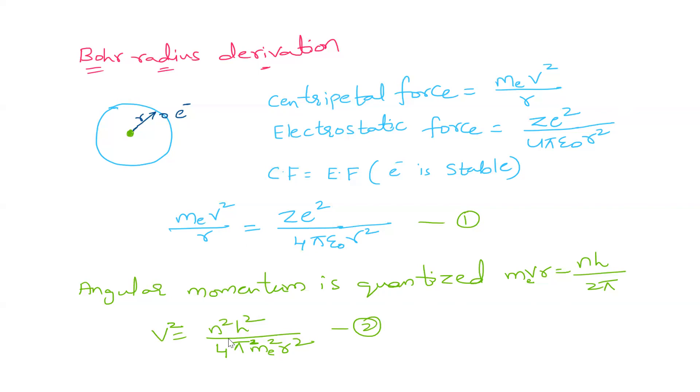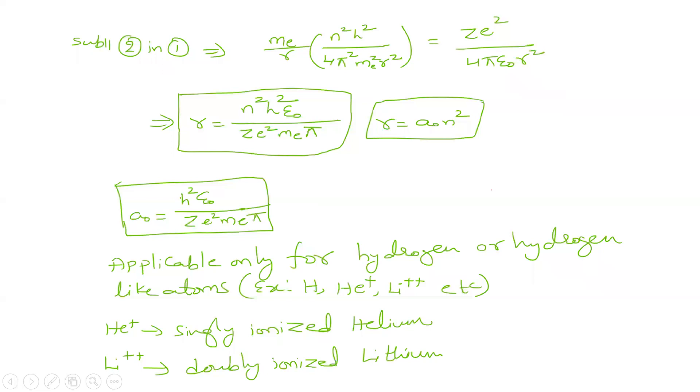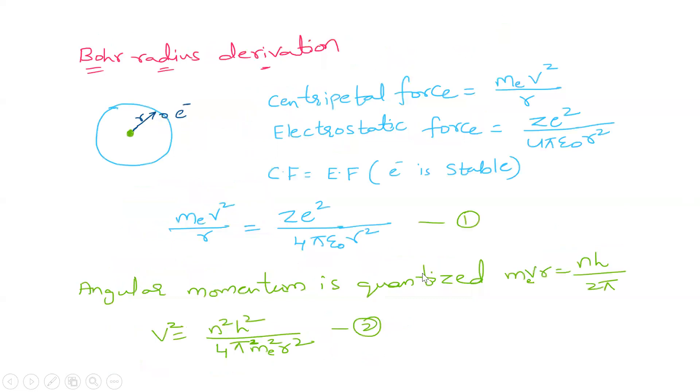So here V² will be N²H² by 4π²Me²R². We are calculating V² here like this and then when we substitute equation 2 in equation 1, V² here.